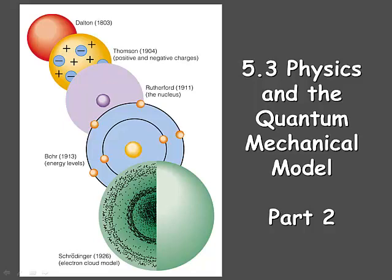Hello again. Welcome back to the second part of 5.3, Physics in the Quantum Mechanical Model. This image shows the change in the atomic model as we went from Dalton's original concept of atoms as hard spheres, clear up through our current model, the electron cloud model, based upon Schrödinger's equation.